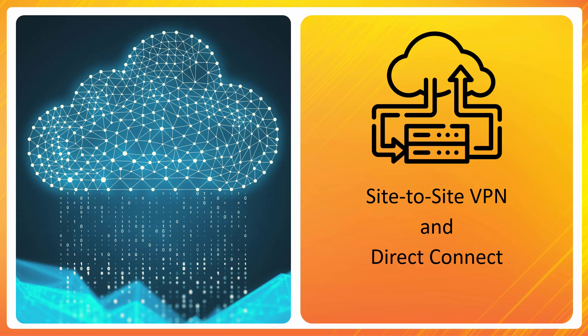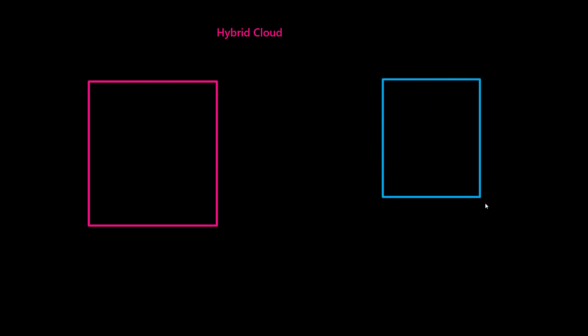Let's talk about site-to-site VPN and Direct Connect. First, let's understand why we need a solution like this and what we are trying to achieve from it. Sometimes customers may not be into the cloud completely, but they may be operating a hybrid cloud setup. This setup basically means that you would have some components running in AWS environment, and maybe remaining components would still be running on-premises.